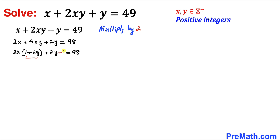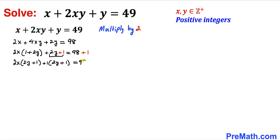Now we can see we have 1 plus 2y appearing. We are going to add 1 to both the left and right hand sides, giving us 2x times (2y plus 1) plus (2y plus 1) equals 99. Factoring out (2y plus 1), we get (2x plus 1) times (2y plus 1) equals 99.